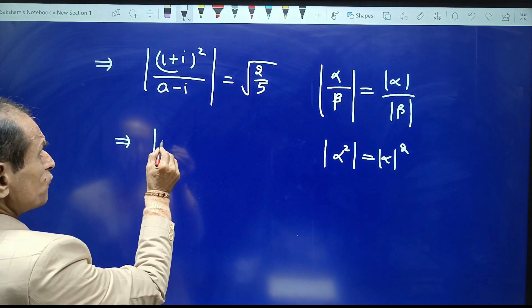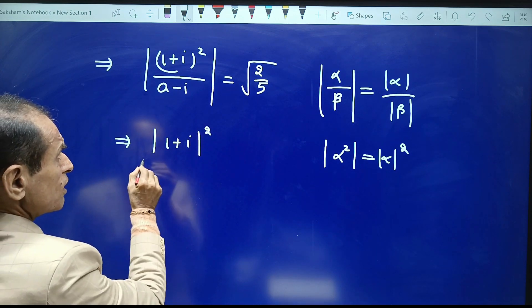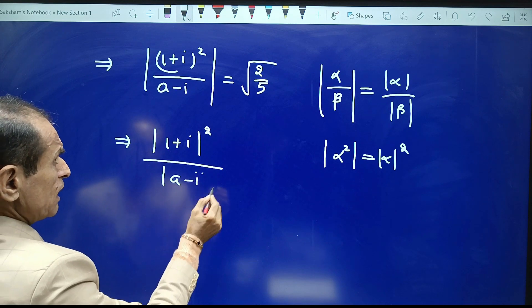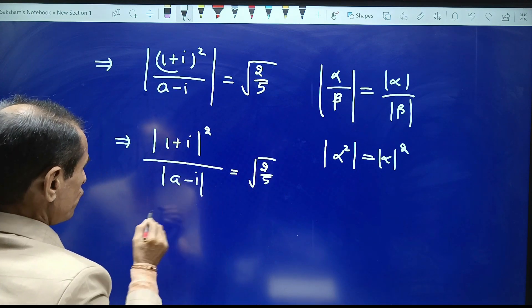I can write it as |(1+i)²|/|a-i| = √(2/5).